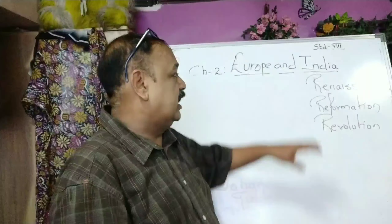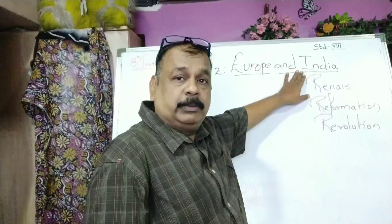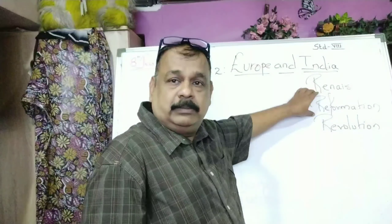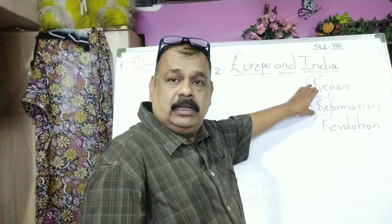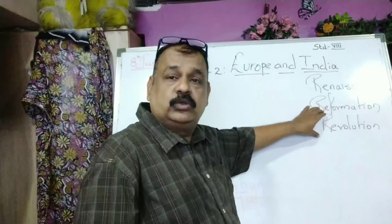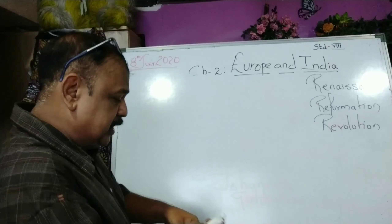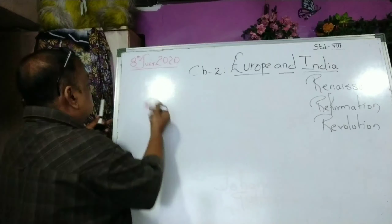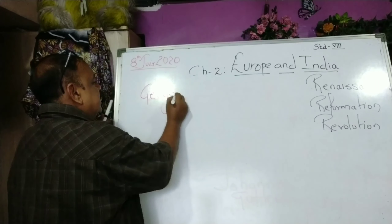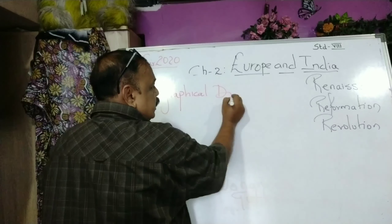So we talked about the three R's: there was Renaissance, which brought about a drastic change in the life of the people. Then we discussed about religious Reformation, because of the invention of the printing press. Now let us go to the next — Revolution. But before revolution, let us understand something very important: that is, geographical discoveries. In between the three R's, why geographical discoveries? That you really need to understand.